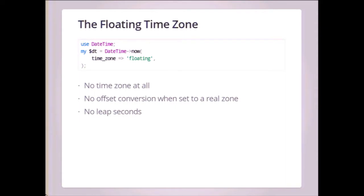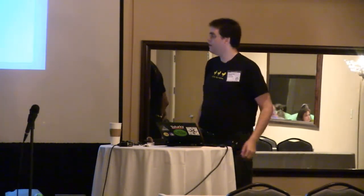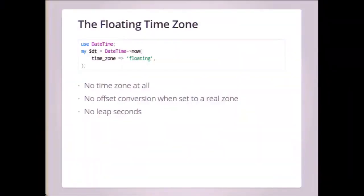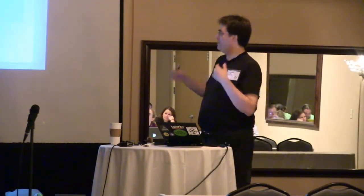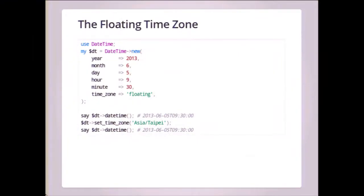There's also this thing called the floating time zone, which is really the absence of a time zone — think of it as the 'undef' of time zones. If you set the time zone to floating, you don't have a time zone. When you convert to a real time zone, the local time would be unchanged. Also, no leap seconds for these time zones, because leap seconds are fixed to UTC. This can be useful if you just don't want to think about time zones or leap seconds at all — make all your DateTimes floating and you don't have to think about it, which is fine if all your times are in just one time zone.